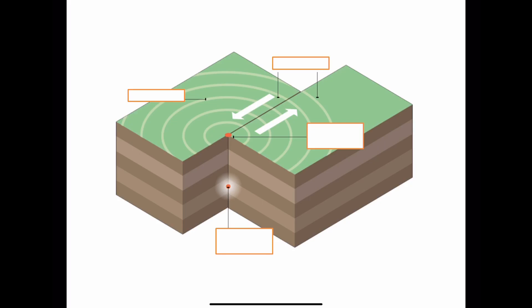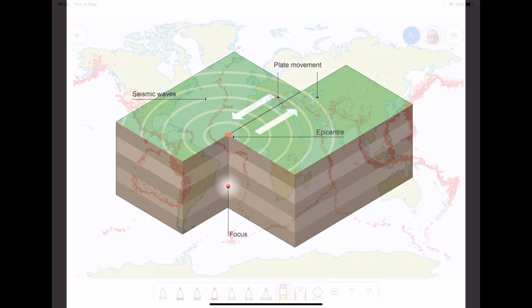Now we need to look at the key features that each earthquake has. All the energy that gets released causing the ground shaking - that is what we call seismic waves. The point under the actual surface where the earthquake starts in the crust is called the focus. The point directly above it on the surface, where you would have the most intense shaking, is called the epicenter. All diagrams should also show the plate movement that causes all of this.